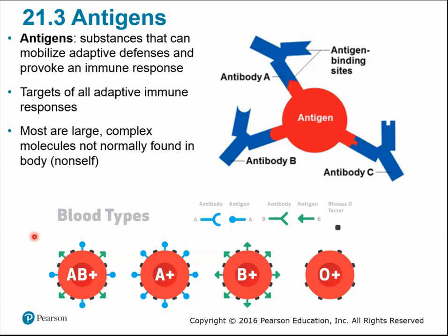This is similar to blood typing, where different blood types are determined by the antigens or proteins on their surface. Antibodies in donated blood can trigger a transfusion reaction — for example, a type A person has anti-B antibodies, so if they receive type B blood, those anti-B antibodies bind to the B antigens, causing cells to clump and rupture. This illustrates how antigens are specific — that lock-and-key fit.